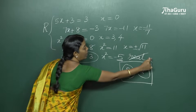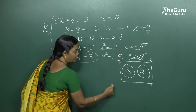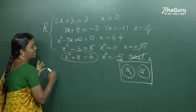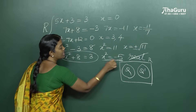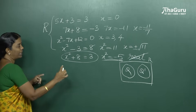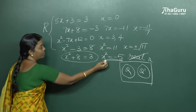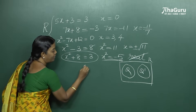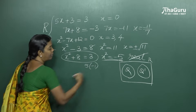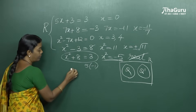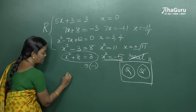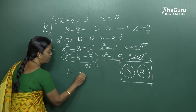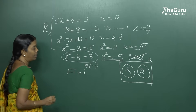So we have to expand the set of real numbers into a bigger set to accommodate this solution. Please listen carefully: this minus 5, we split it as 5 times minus 1, and this root of minus 1 we call the imaginary number i.